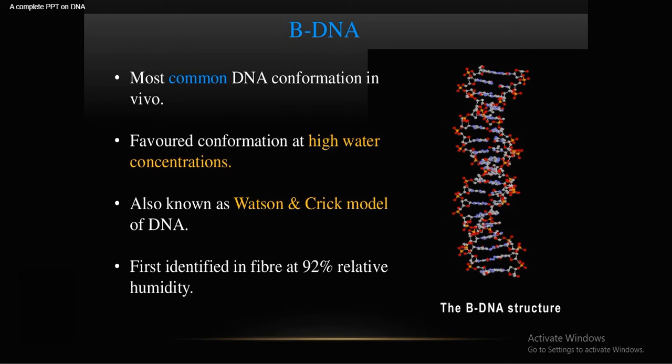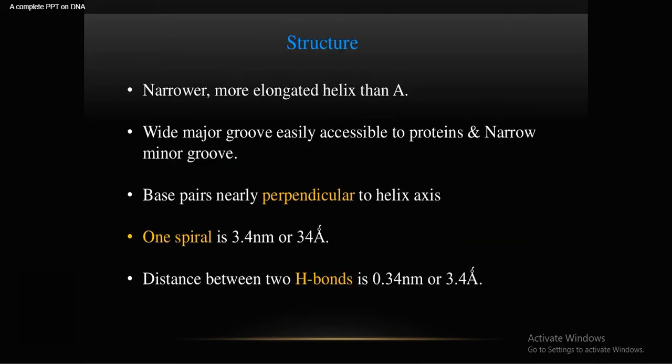B-DNA is the most common form of DNA and the favored conformation at high water concentration. Also known as the Watson-Crick model of DNA, it was first identified in fiber at 92% relative humidity. Its structure is a narrow, more elongated helix than A-DNA, with a wider major groove easily accessible to proteins, a narrow minor groove, and base pairs nearly perpendicular to the helix axis.